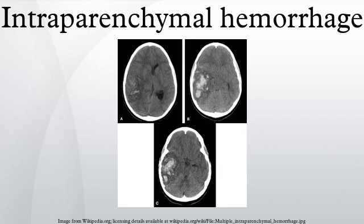Glioblastomas are the most common primary malignancies to hemorrhage, while thyroid, renal cell carcinoma, melanoma, and lung cancer are the most common causes of hemorrhage from metastatic disease. Other causes include hemorrhagic transformation of infarction, which is usually in a classic vascular distribution and is seen approximately 24-48 hours following the ischemic event. This hemorrhage rarely extends into the ventricular system.